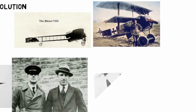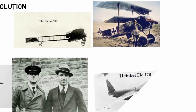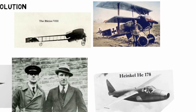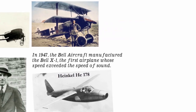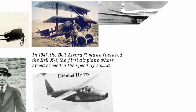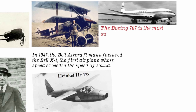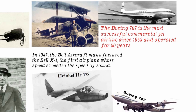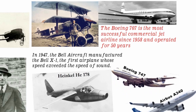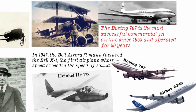During this intense period, German aircraft manufacturing company Heinkel tested their first jet plane, the Heinkel He 178. The Germans later released the fighter-bomber jet version, the Messerschmitt Me 262, in 1943. The United States soon followed the jet trend. In 1947, Bell Aircraft manufactured the Bell X-1, the first airplane whose speed exceeded the speed of sound. By 1952, the de Havilland Comet became the world's first commercial jet airliner. The Boeing 707 became the most successful commercial jet airliner since 1958 and operated for 50 years, while its 1969 successor, the Boeing 747, carried the record for largest passenger capacity until the Airbus A380 surpassed it in 2005.